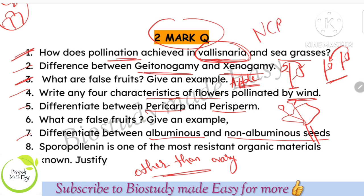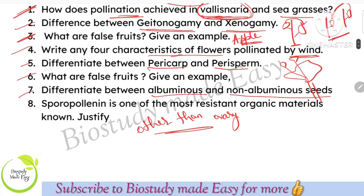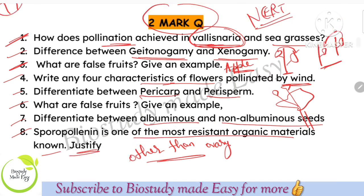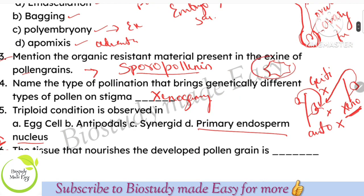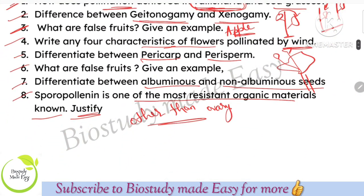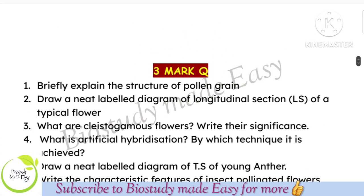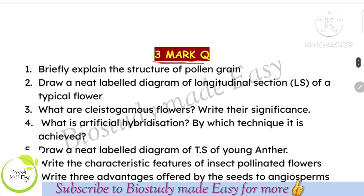Make sure to note the flower characters, pollen grain characters, and stigma characters for each pollination type. This is important for 2-mark, 3-mark, and 5-mark questions. For wind pollination, flowers must be exposed; anthers and stigma must be exposed. Pollen grains must be lightweight and non-sticky for easy carry by wind. Open your NCERT textbook — reading it will help you with MCQ and fill-in-the-blank questions. Sporopollenin is one of the most resistant materials — justify: because it is present in the exine.